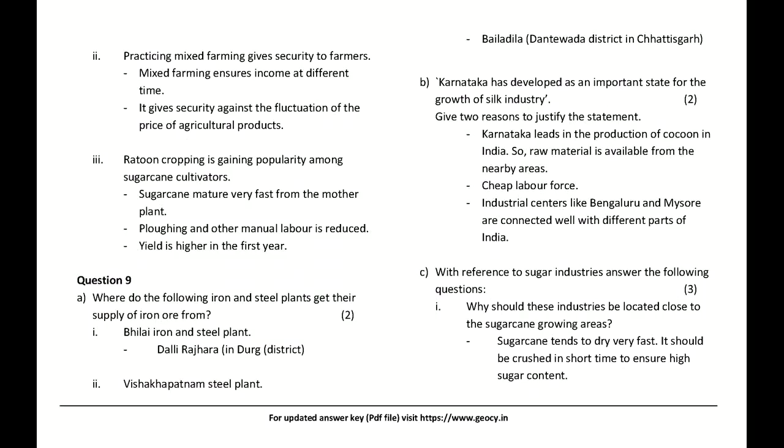Ratoon cropping is gaining popularity among sugarcane cultivators because sugarcane matures very fast from the mother plant, plowing and other manual labor is reduced, and yield is higher in the first year.